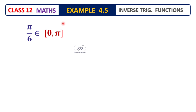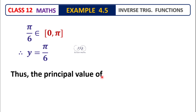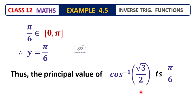Pi by 6 lies in the interval 0 to pi, so this is the principal value. If it did not lie in the 0 to pi interval, it would not be the principal value. But pi by 6 lies in the interval, so y is equal to pi by 6. Therefore, the principal value of cos inverse of root 3 by 2 is pi by 6. The range of cos x is 0 to pi, and the principal value is pi by 6.